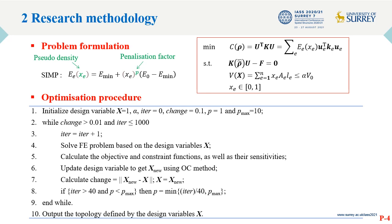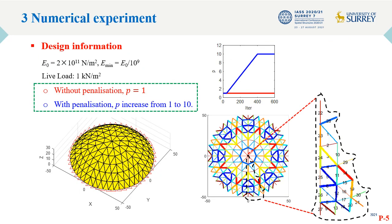The optimization procedure is given below. We consider a spherical gridshell structure as the design example. The elements can be categorized into 30 groups. A uniformly distributed load is considered.